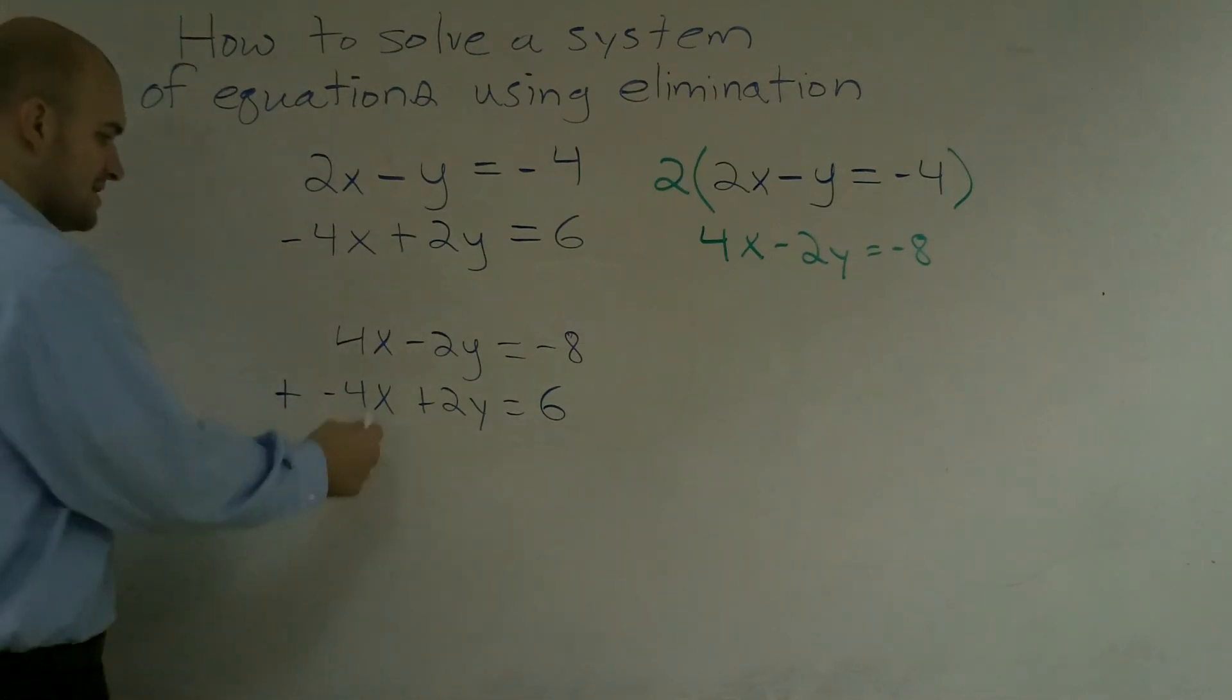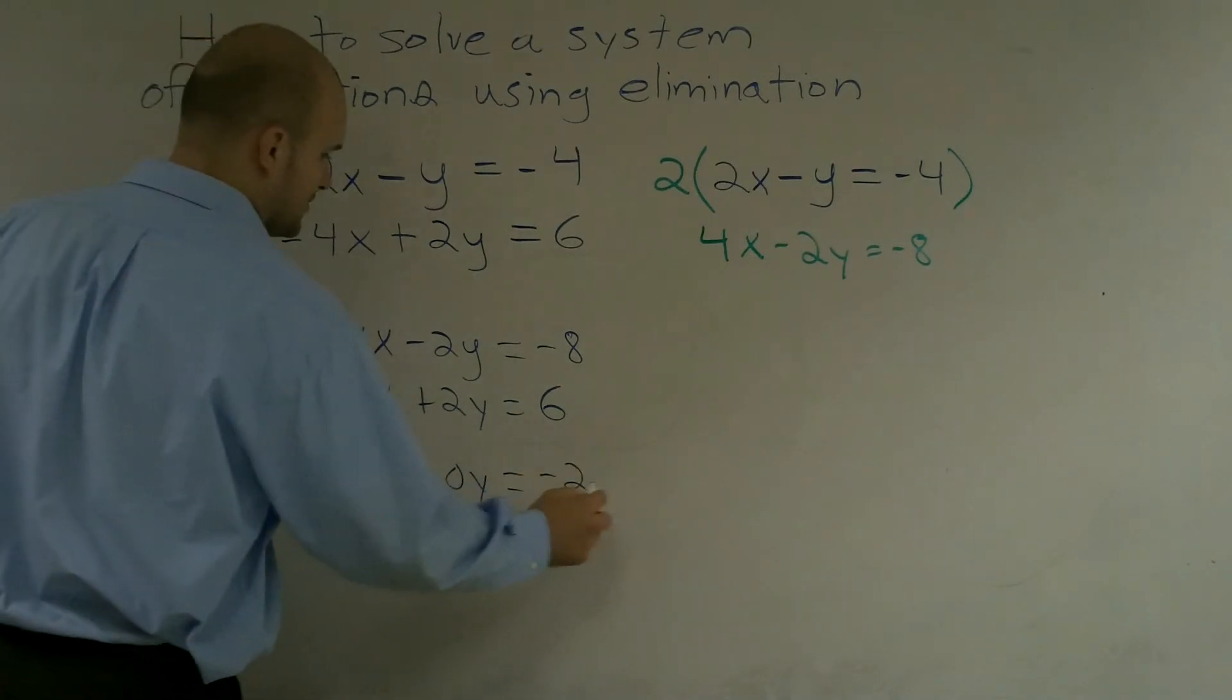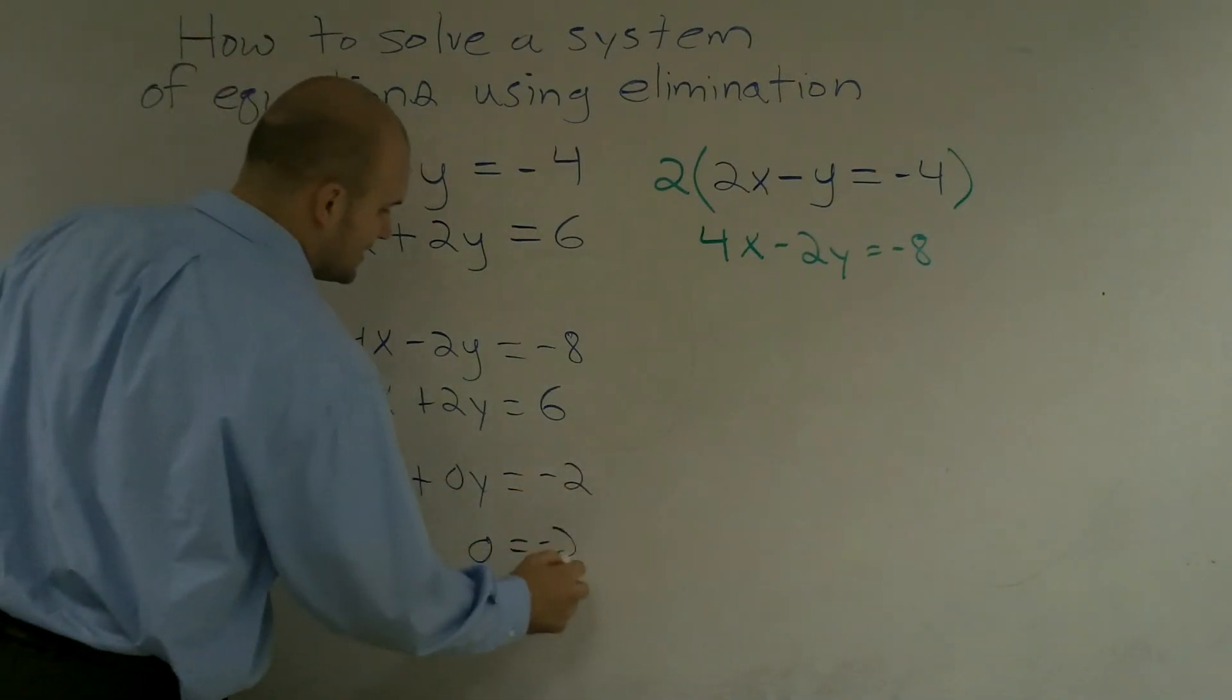And now when I add my equations, actually I get a 0x plus a 0y equals negative 2. 0 equals negative 2.